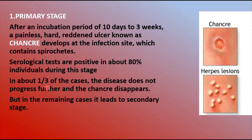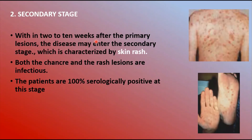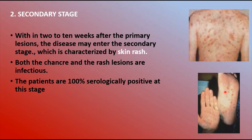In the secondary stage, within two to ten weeks after the primary lesions, the disease may enter the secondary stage, characterized by a skin rash. Both the chancre and the rash lesions are infectious. Patients are 100% serologically positive at this stage, so any syphilis test performed on a person with these rashes and chancre will return a positive result.